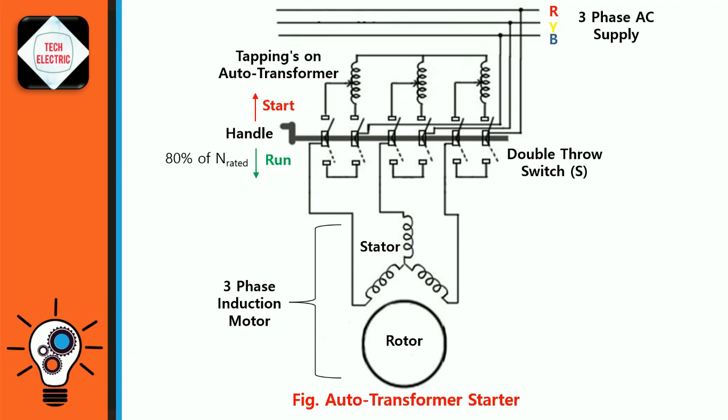The handle is held in the run position by the under-voltage relay. If the supply voltage fails or falls below a certain value, the handle is released and returns to the off position. Additionally, thermal overload relays are provided for the overload protection.